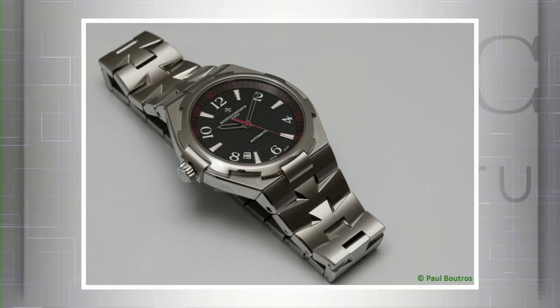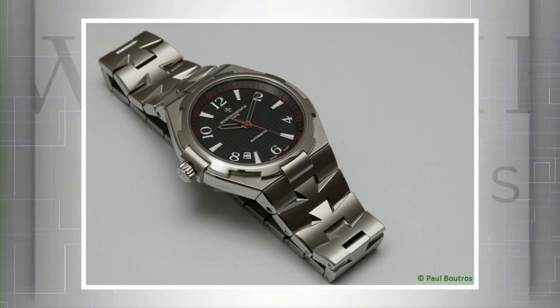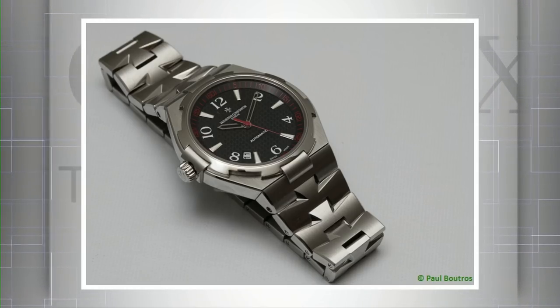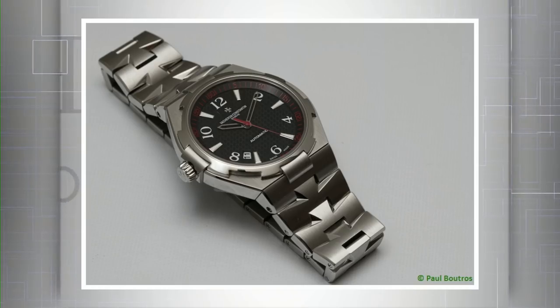If you want the ultimate in exclusivity, the Vacheron Constantin Overseas Automatic Lefty. This was made during the 2000s from the generation 2 stock through Vacheron's Les Cabinotiers custom shop, the same custom shop that made the impossibly complicated 57260 pocket watch. You can have one tomorrow if you want by special order - they can make you a Gen 3 Overseas Lefty with a black dial. Thanks to Vacheron's custom shop, just about anything you can imagine could be yours.